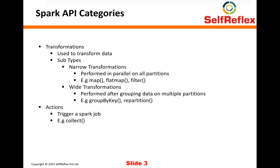Let's first look at some of the basic operations that we perform in Spark. Most of the APIs that Spark provides can be divided into two basic operations: first is the transformations and the second is the actions. Transformations are used to transform your data from one form to some other form. We've already seen some of the transformations in action, like map, flat map, filter, reduce by key, group by key, repartition, etc. All these transformations basically take some data as input, apply some logic, and then produce some data as output.